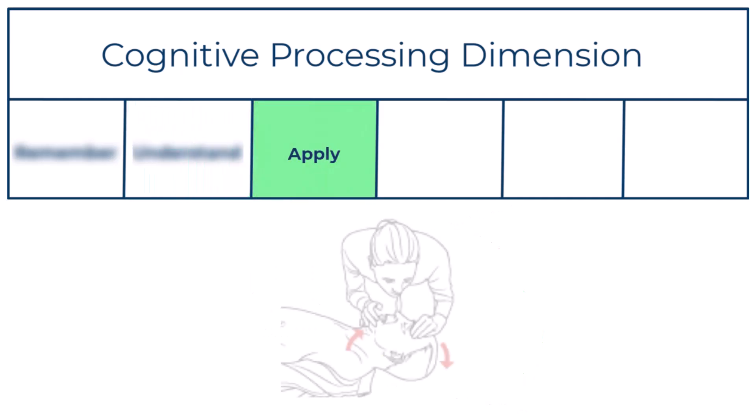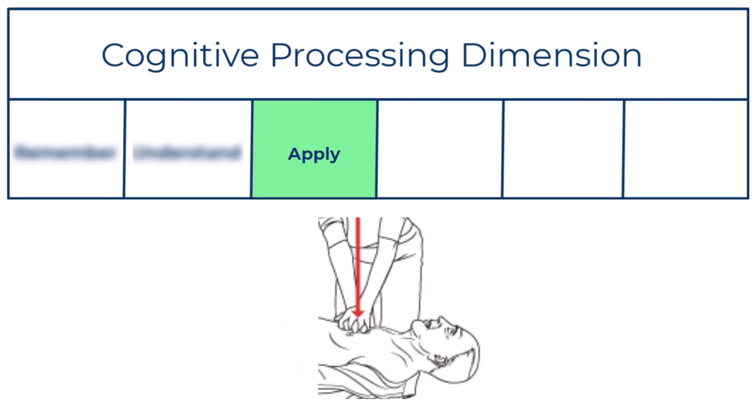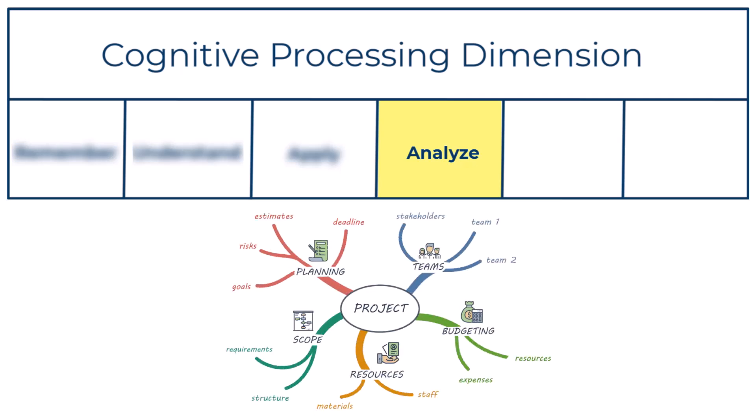The third level, apply, involves carrying out or using a procedure in a given situation. The fourth level, analyze, includes breaking material into constituent parts and determining how the parts relate to one another and to an overall structure or purpose.